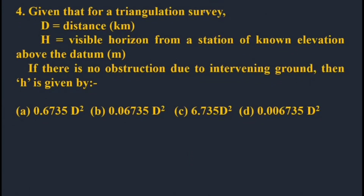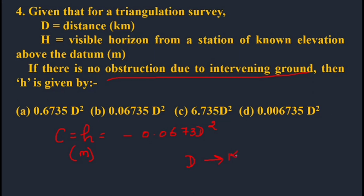Question four: For triangulation survey, the correction for curvature and refraction with distance d in km and height h in meters follows the formula h = −0.06735 × d². Option B is the correct option.